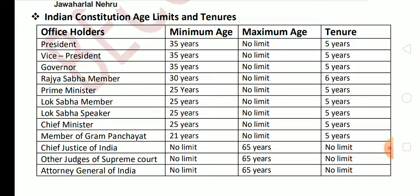Vice President — same as President: minimum 35 years, no maximum limit, tenure 5 years. Governor — same: minimum 35 years, no maximum, tenure 5 years. Rajya Sabha member — minimum age 30 years. Prime Minister — minimum 25 years. Lok Sabha member — minimum 25 years. Rajya Sabha member tenure is 6 years. Prime Minister tenure is 5 years. Lok Sabha member tenure is 5 years. Lok Sabha Speaker tenure is also 5 years.